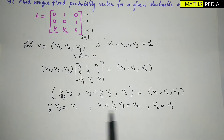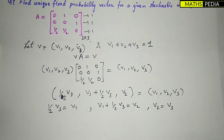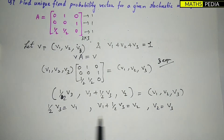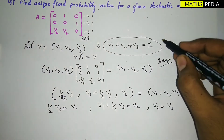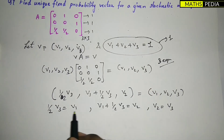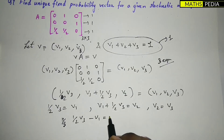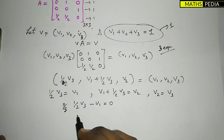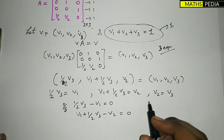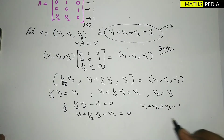From these three equations, we choose two and use the main equation v1 + v2 + v3 = 1 as the third. So I take: (1/2)v3 − v1 = 0 as the first, then v1 + (1/2)v3 − v2 = 0 as the second, and v1 + v2 + v3 = 1 as the main equation.